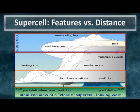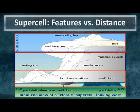Throughout the next couple of slides, we're going to look at the supercell storm from three basic viewpoints: the first from far back, say 20 miles or so; the second at a mid-range of about 10 to 20 miles; and the third being close into the storm — less than 10 miles — with features to look for at each distance.